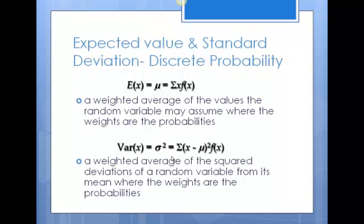The variance is calculated in much the same way as in Chapter 3, except we can't just add up all the squared deviations from the mean and divide by n minus 1, because the distribution is not uniform — there are different probabilities of occurrence for each outcome. Our variance is calculated as the weighted average of the sum of squared deviations from the mean, where the weights are the probabilities. So f(x) is the probability of x occurring, multiplied by its deviation from the mean.